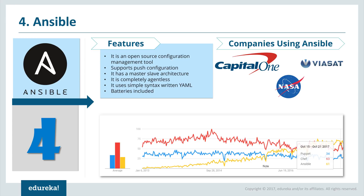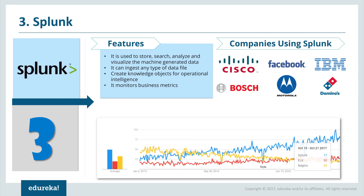Splunk is used to store, search, analyze, and visualize machine-generated data. It can ingest any type of data file, create knowledge objects for operational intelligence, and monitor business metrics. Companies using Splunk include Cisco, Facebook, IBM, Bosch, Motorola, and Domino's. When compared with ELK and Nagios, Splunk is a clear winner on Google Trends.